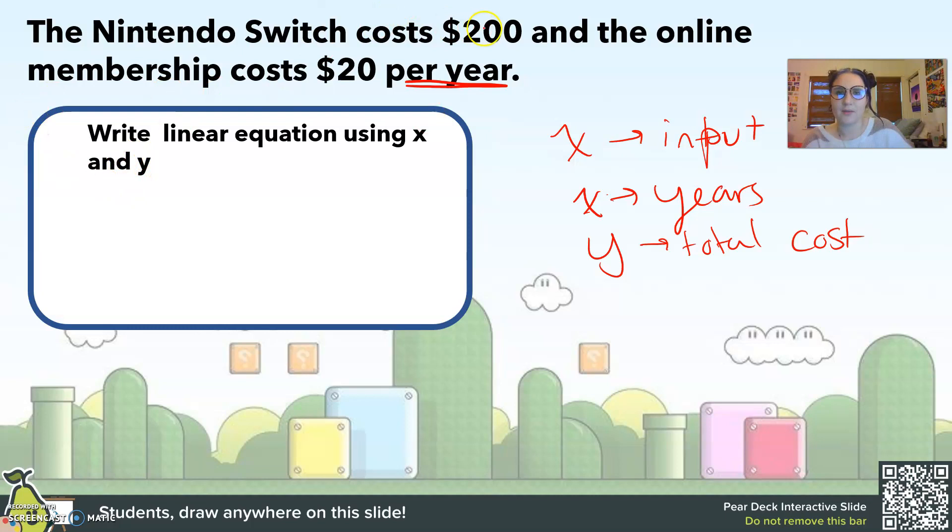So let's let x be our years and y be the total cost. So $20 and the online membership is $20 per year. So 20 times x or the number of years plus 200 will equal my total cost. So y equals 20x plus 200.